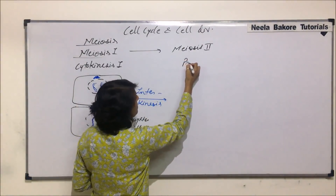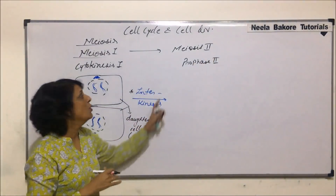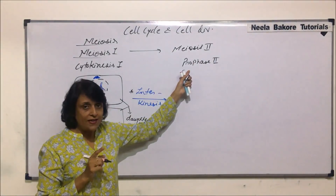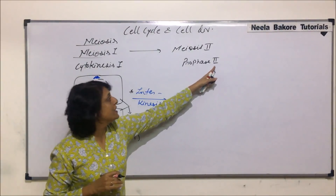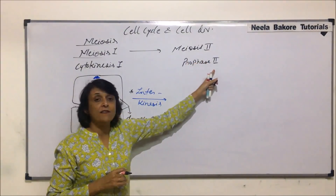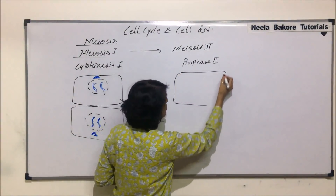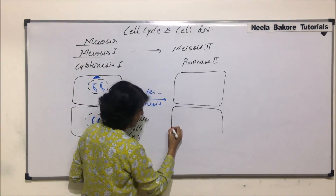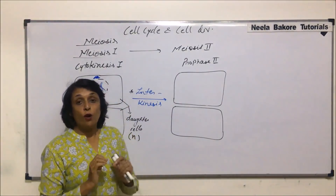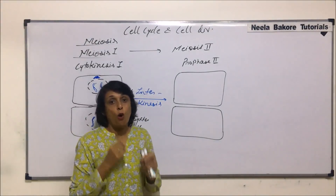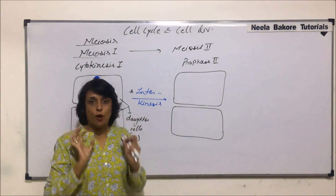Now we are talking of prophase 2. The cells have entered meiosis 2, and the stages are the same as before. Karyokinesis has begun — the nucleus is going to divide — and prophase is the first phase, but it is part of meiosis 2, so we call it prophase 2. In prophase, the centrioles undergo splitting and move towards the opposite poles.